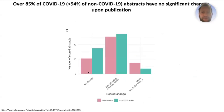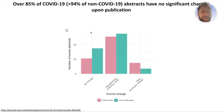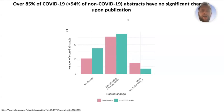We also looked at the abstracts, which are really important because that's the one part of a paper everyone can read whether it's paywalled or not. Comparing the preprint to the published version, again there wasn't much change. 94% of non-COVID research we looked at showed no significant change between preprint and published version — wording might have changed slightly to be a bit stronger or softer, but it was a very minor change and the key conclusions did not change. So if they're not changing, what is peer review doing?